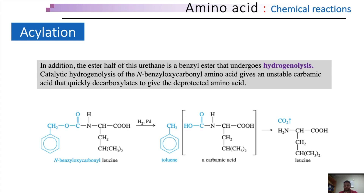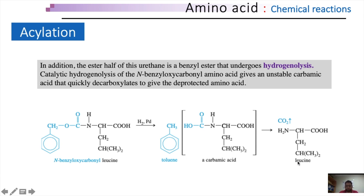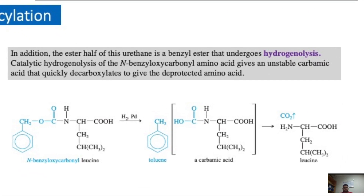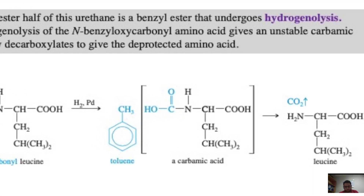As discussed earlier, the reactions can be reversed to retrieve amino acids back in their native form. The same is the case for N-benzyloxycarbonyl leucine. The ester half of this urethane is a benzyl ester that undergoes hydrogenolysis — a reaction for breaking apart a molecule by addition of hydrogen. Catalytic hydrogenolysis of the N-benzyloxycarbonyl amino acid in the presence of excess hydrogen and palladium as a catalyst gives an unstable carbamic acid that quickly decarboxylates to give the native amino acid. This also results in the formation of a toluene molecule. Decarboxylation means removal of CO2, and note that carbamic acid is a compound of ammonia (NH3) and CO2.